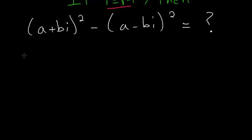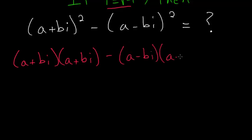Instead of having it squared, I'm going to put the same binomial right next to each other since they mean the same thing. So a minus bi times a minus bi, and this way we can FOIL out each of these.